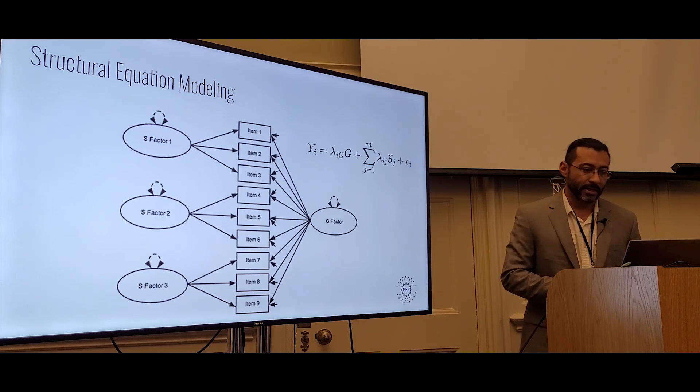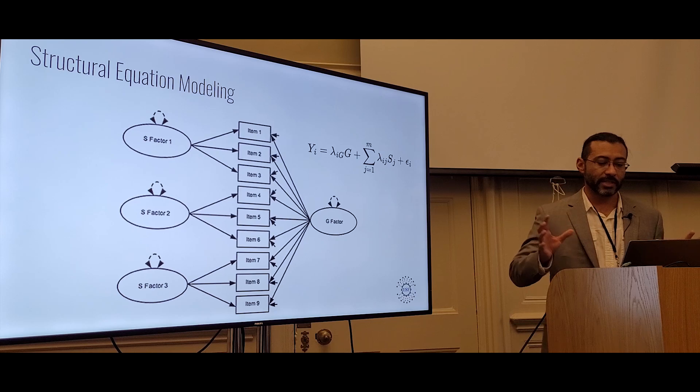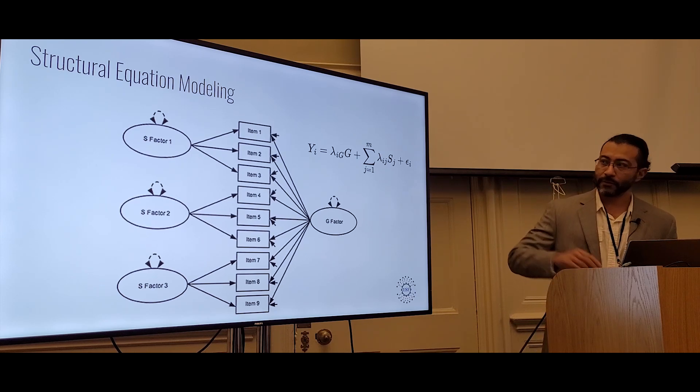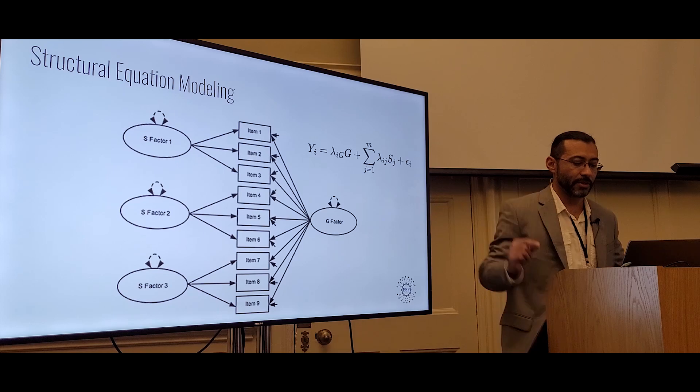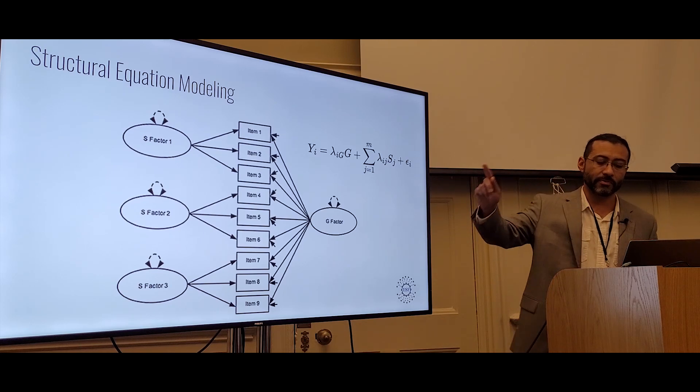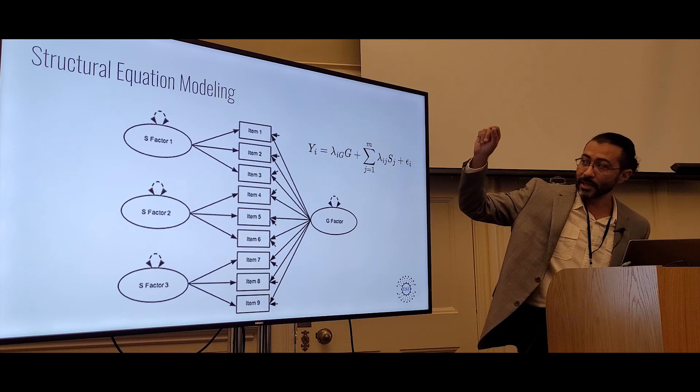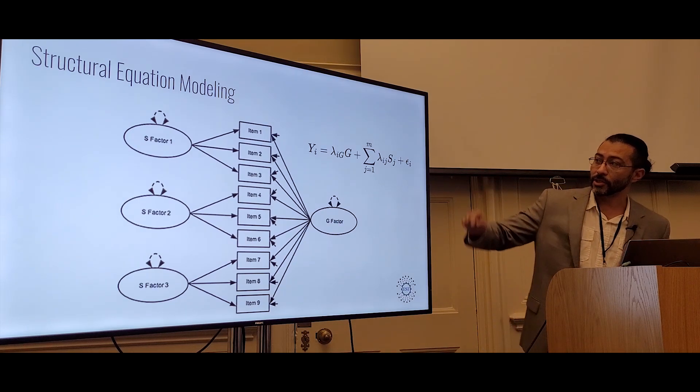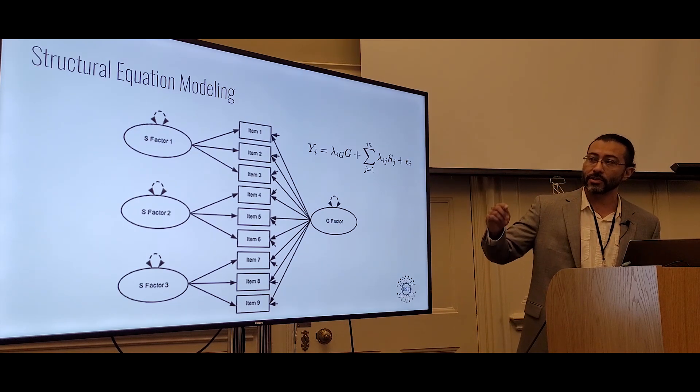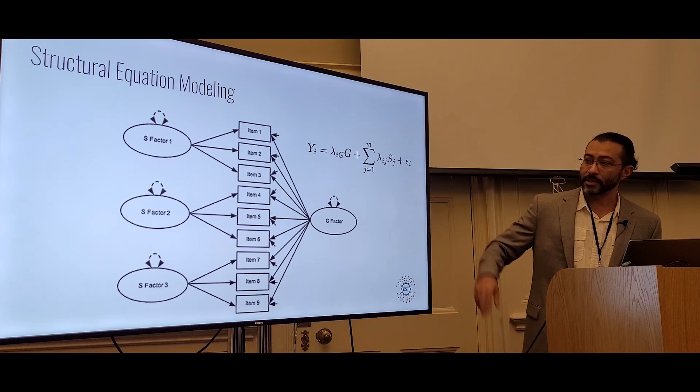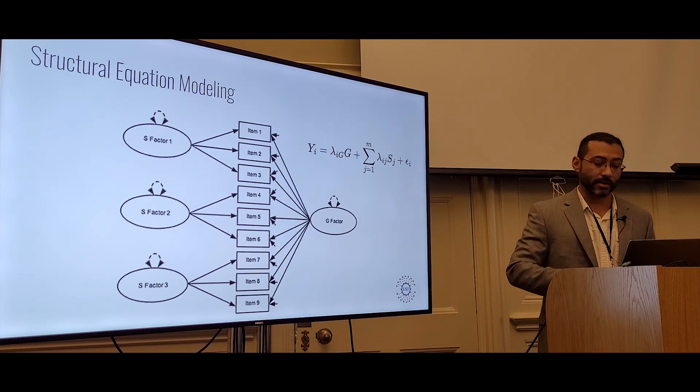For those of you math nerds out there, this entire structure is represented mathematically in a structural equation model formula. The first term provides information to the general factors from these indicators. The second term represents residual information that is then supplied to the specific factors. And the epsilon here is the amount of measurement error in our model.